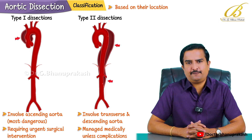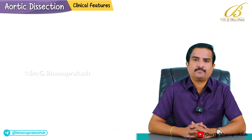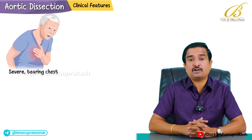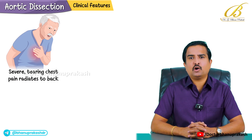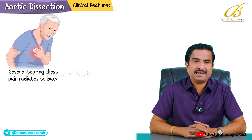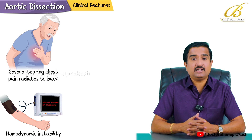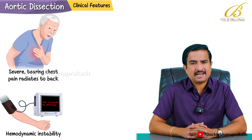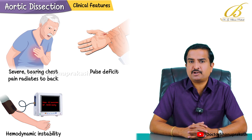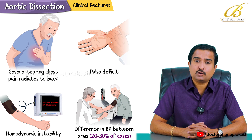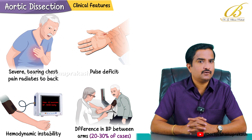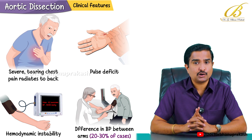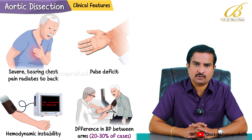The hallmark symptom is severe tearing chest pain that radiates to the back. Patients may also present with hemodynamic instability, as seen in our case. Some may have a pulse deficit or a significant difference in blood pressure between the arms — found in about 20 to 30% of cases — but its absence does not rule out the diagnosis of aortic dissection.